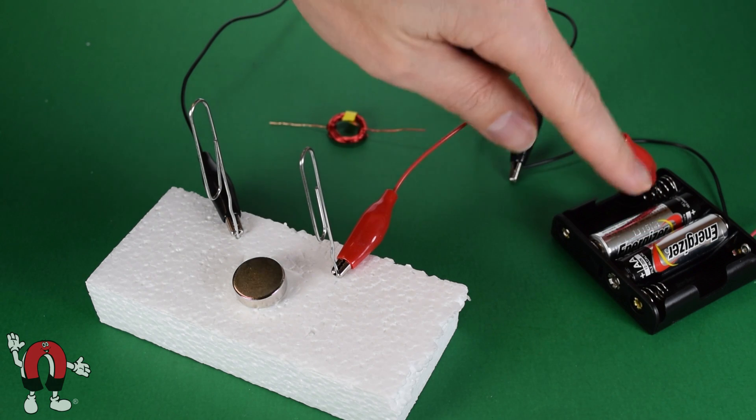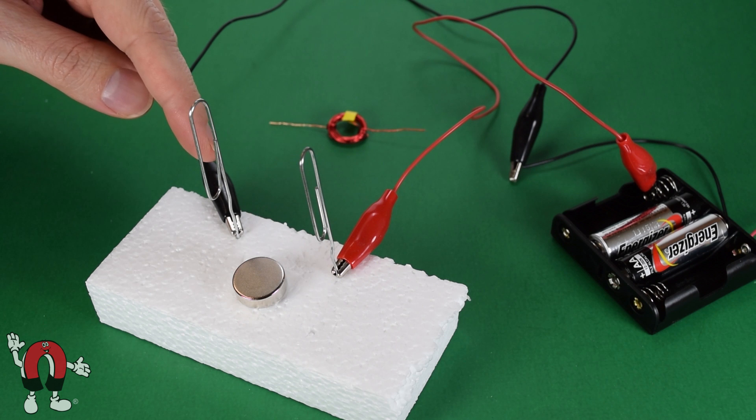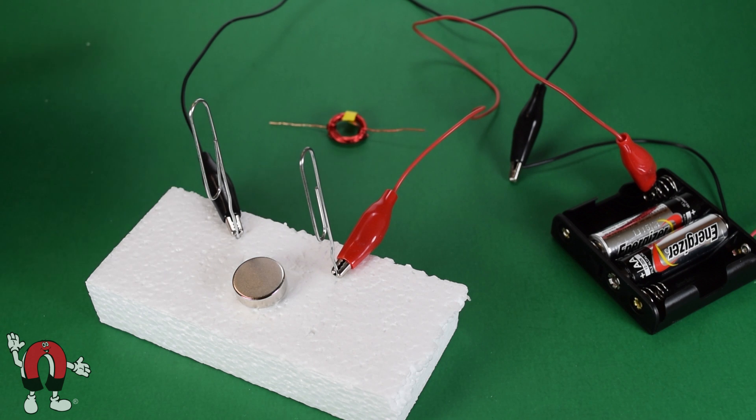Three volts of electricity is connected to either side, positive to this paper clip, negative to this paper clip. At the moment, no electrical connection is made.